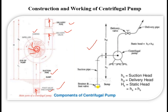This block diagram summarizes the centrifugal pump: the strainer and foot valve at the bottom, the suction head, the discharge head, the delivery valve, and the delivery pipe. The foot valve is a non-return type valve which prevents water from draining back through the suction pipe. This concludes the explanation of the construction and working of the centrifugal pump.